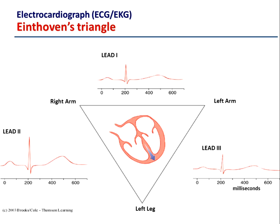This creates a triangle around the heart and allows us to look at the heart from three different vantage points. From the right arm to the left arm, we can see Lead I there on top. From the right arm to the left leg, we see Lead II, which is the most common lead through which we tend to look at the heart. And then from the left arm to the left leg is Lead III.